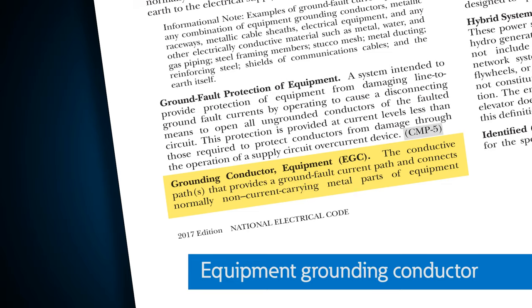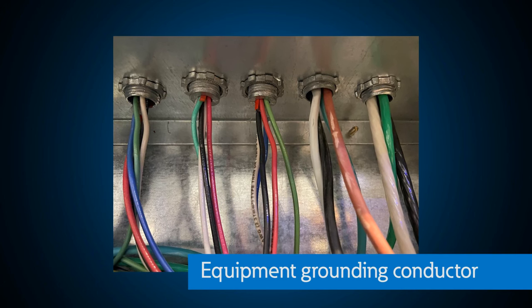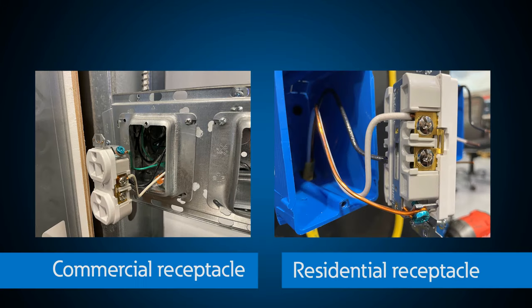The equipment grounding conductor is the conductive path that is part of an effective ground fault current path and connects metal parts of the equipment to the system neutral or grounded phase conductor — back at one location. Think of this as the bare copper conductor that you carry out to all of those loads; if you open up any receptacle, that bare copper conductor you see is your equipment grounding conductor. We want that to be low impedance and able to carry fault current should a ground fault occur in the system.